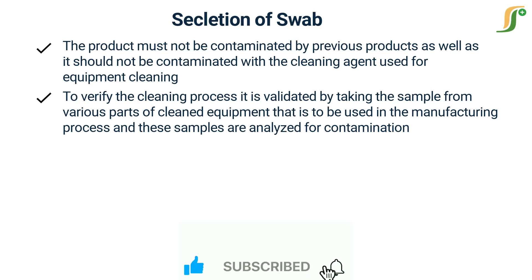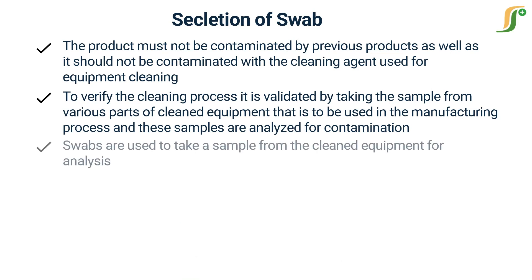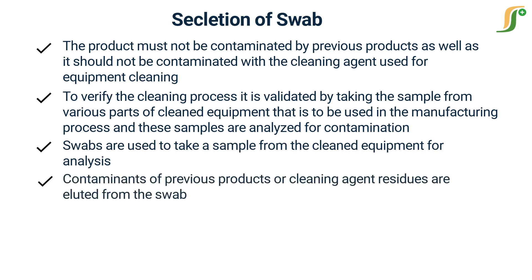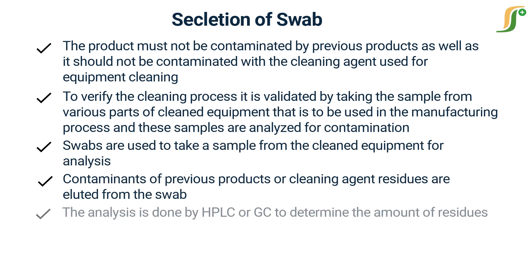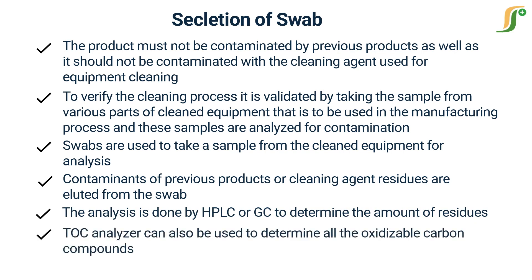These samples are analyzed for contamination. Swabs are used to take a sample from the cleaned equipment for analysis. Contaminants of previous products or cleaning agent residues are eluted from the swab. The analysis is done by HPLC or GC to determine the amount of residues. A TOC analyzer can also be used to determine all the oxidizable carbon compounds.